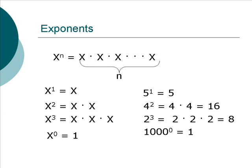Exponentiation is a shorthand notation for multiplication, in the same way that multiplication is a shorthand notation for addition. x to the power of n is equal to x multiplied by itself n times. x is called the base, and n is called the exponent.